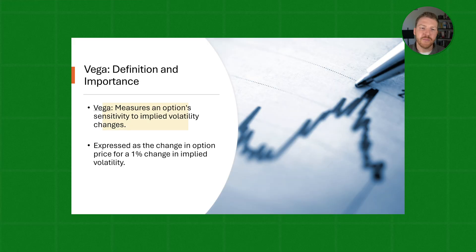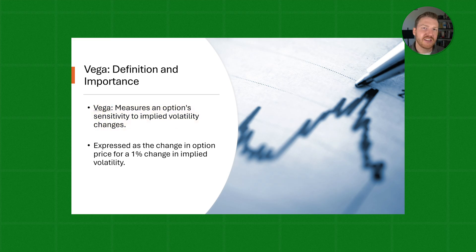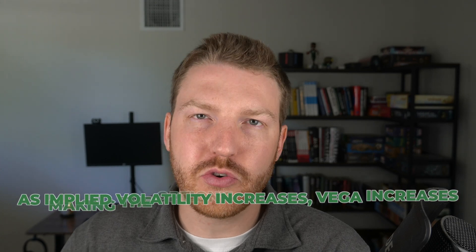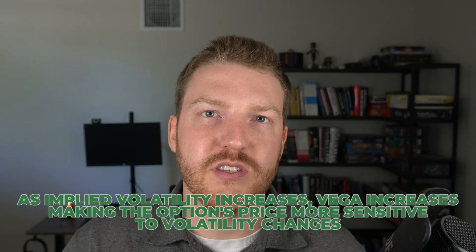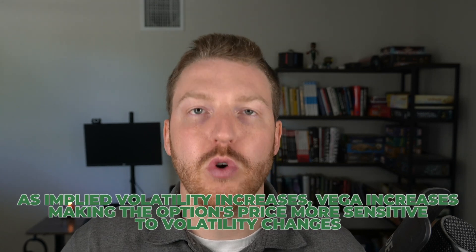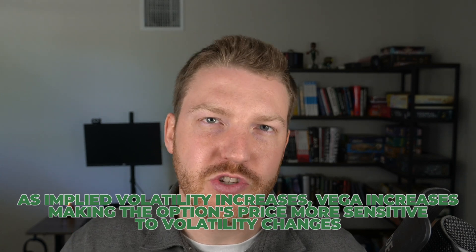Now for the part you've been waiting for — discussing vega. Vega measures an option's sensitivity to implied volatility changes. It is often expressed as the change in an option's price for a 1% change in implied volatility. As implied volatility increases, vega increases, making the option's price more sensitive to volatility changes.